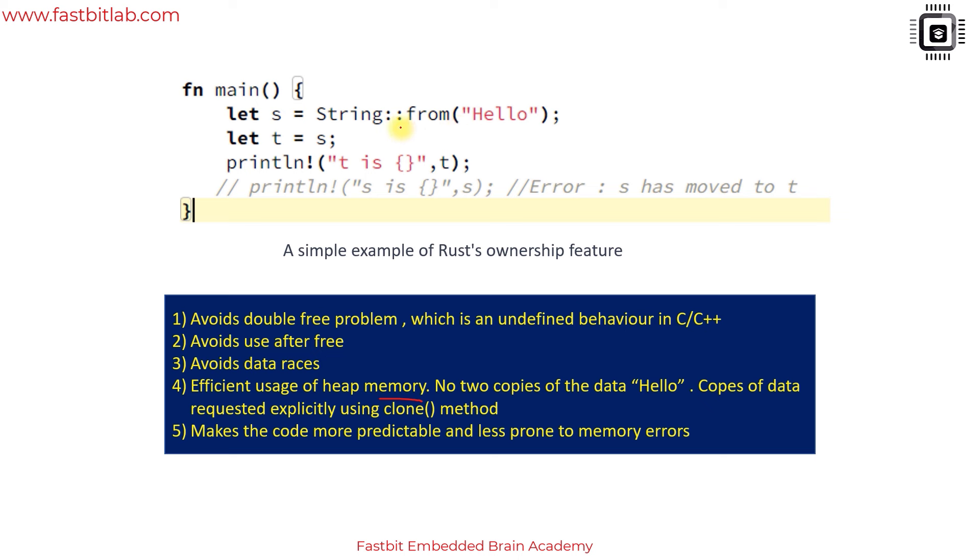This also avoids use after free issue and efficient usage of heap memory. Here the data is not copied - remember that the heap still holds only this data. There is no copy of this data, the ownership is moved to t. If you want copies of data then you have to explicitly call the clone method.